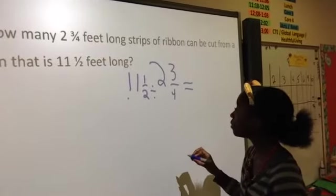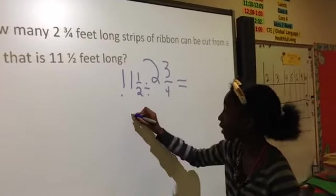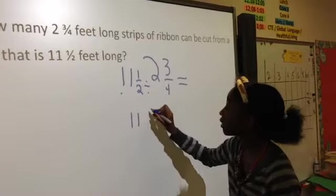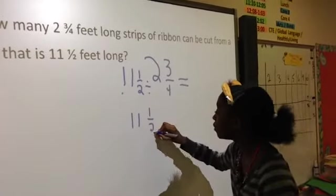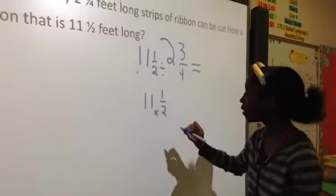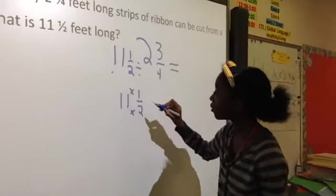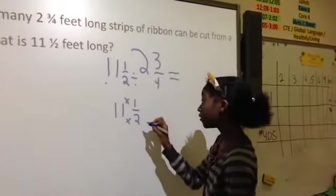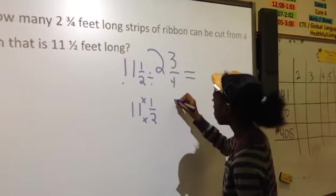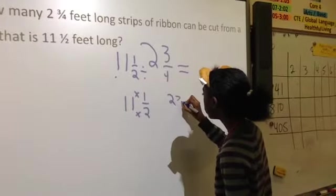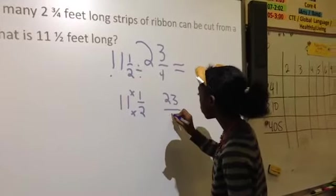First you'd want to turn both of these to an improper fraction. So 11 and a half, and you do that by multiplying the whole number by the denominator, then adding the numerator. So 11 times 2 is 22, plus 1 is 23, but you keep the denominator, so that's 23 over 2.